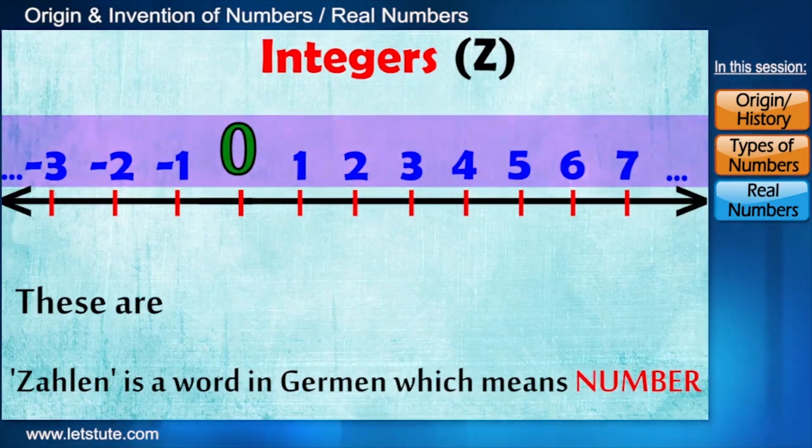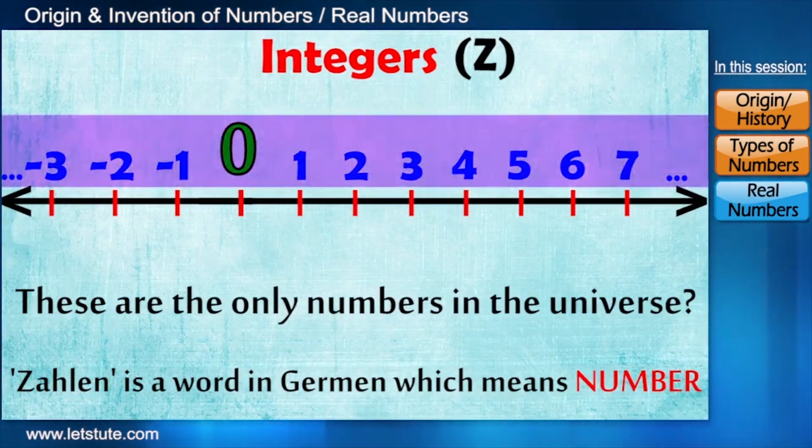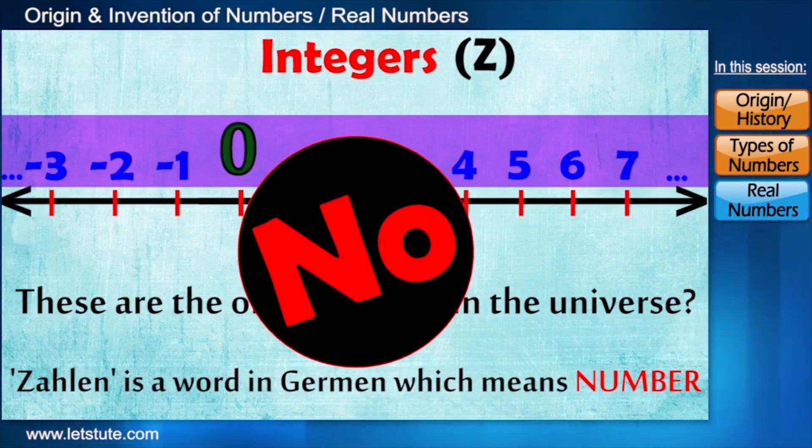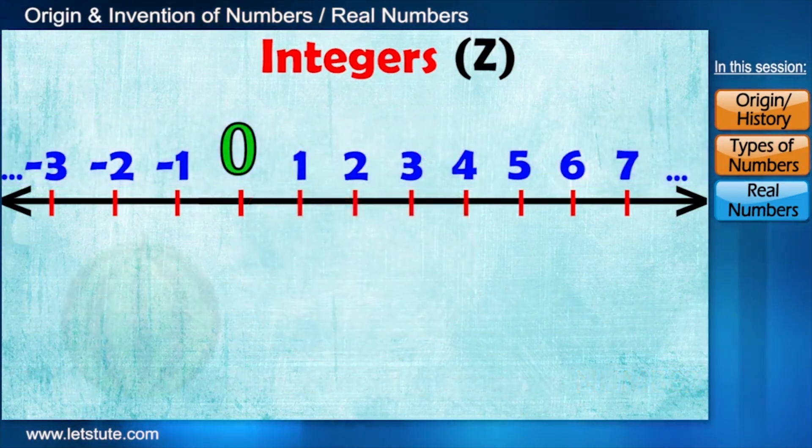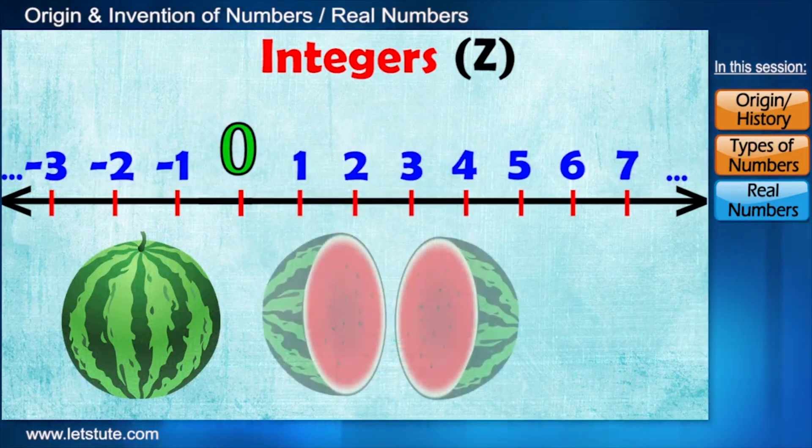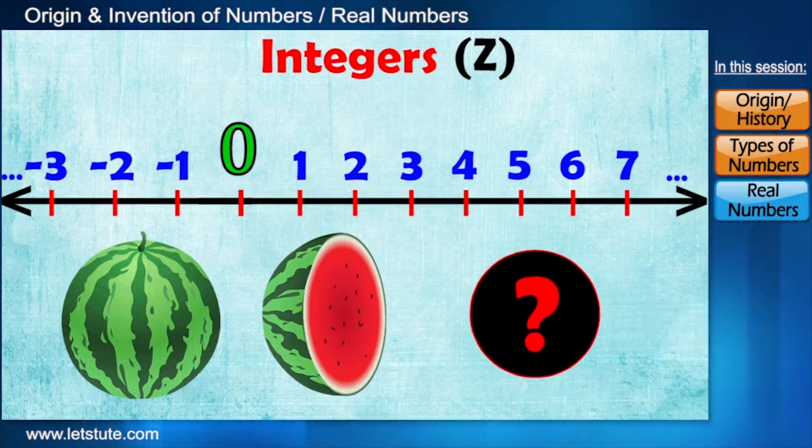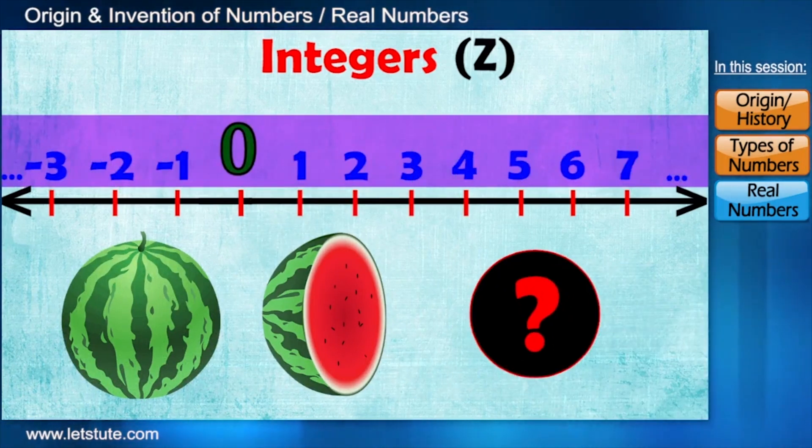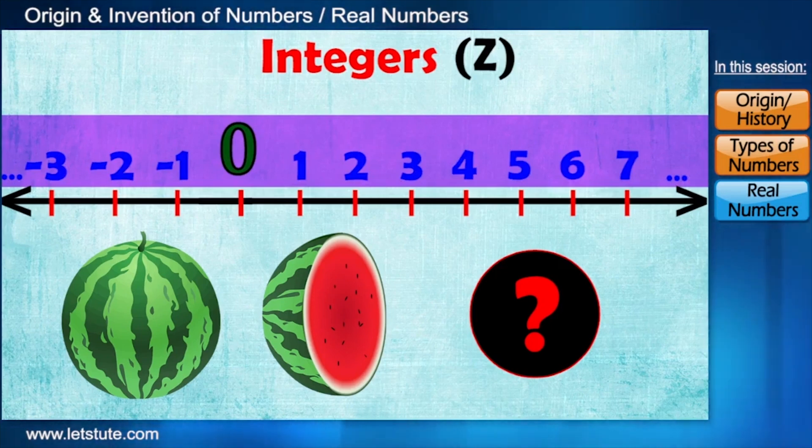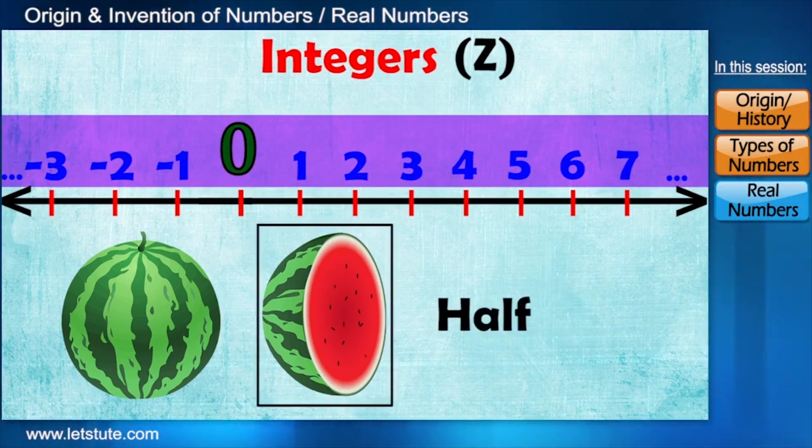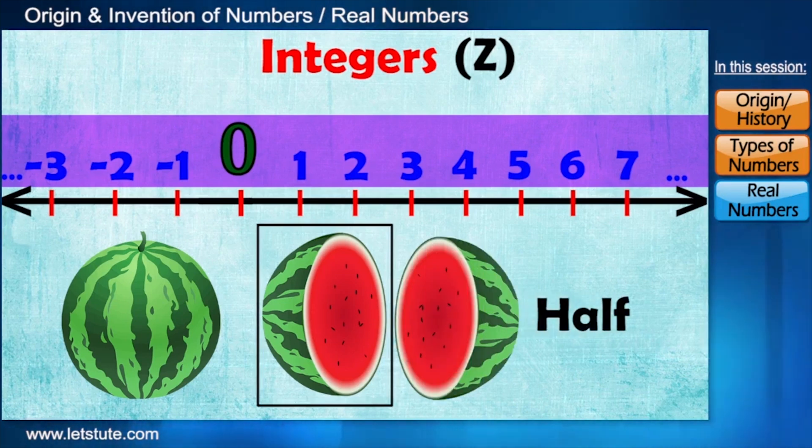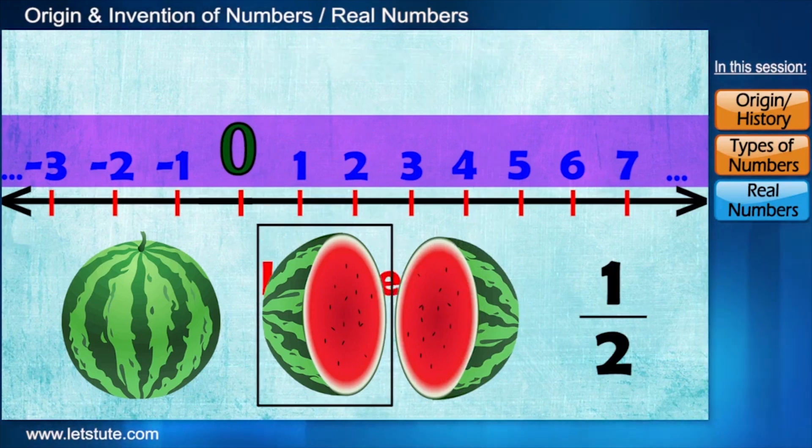So do you think these are the only numbers in the universe? No. Let's take an example. Suppose you have a watermelon and divided into two equal parts and you ate one part of it. Can you represent how much watermelon you had by using these numbers? It's not possible by using these numbers, right? So here comes the need of a different kind of number to represent half. Since half means one out of the two equal parts, we write half as 1 upon 2, also known as fraction.